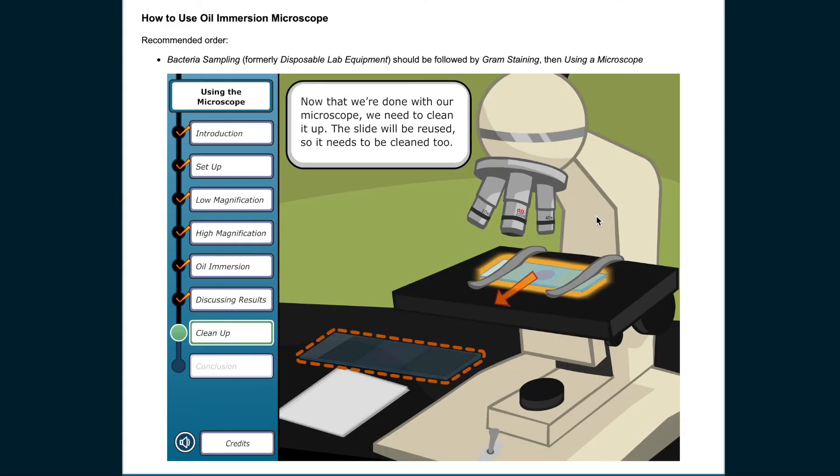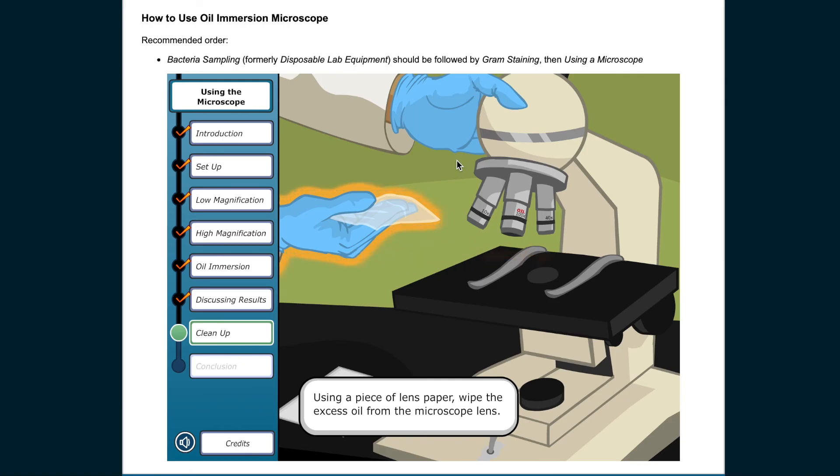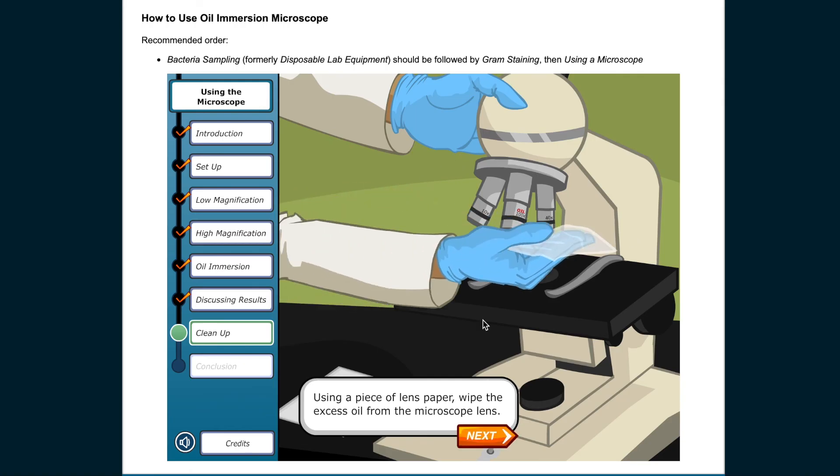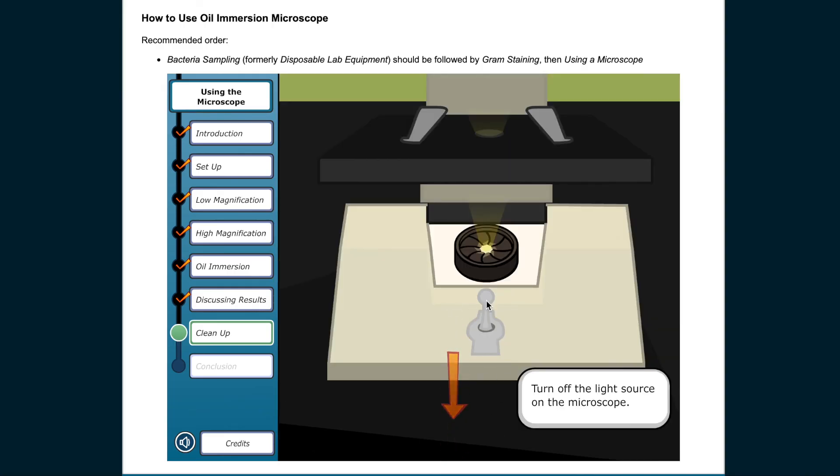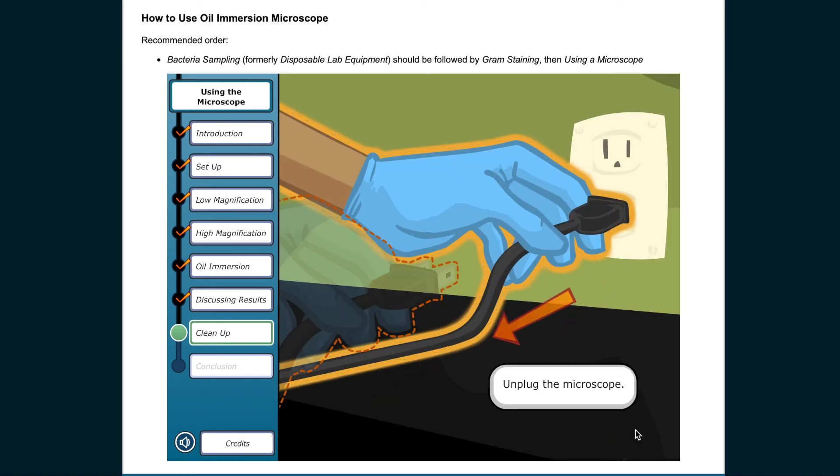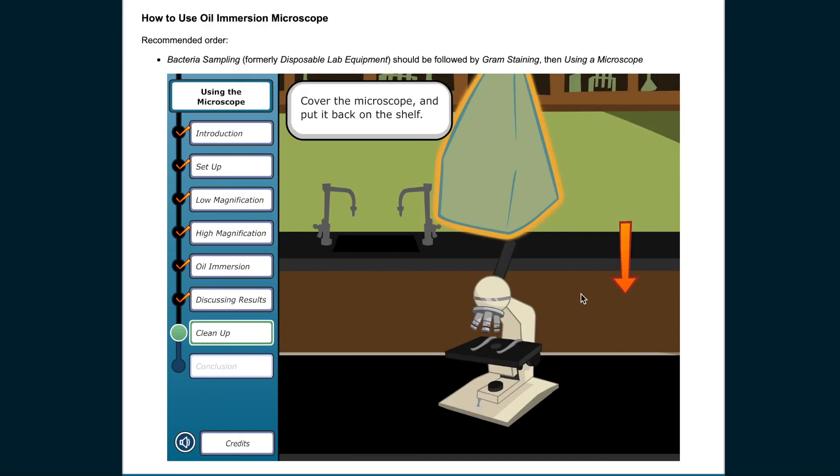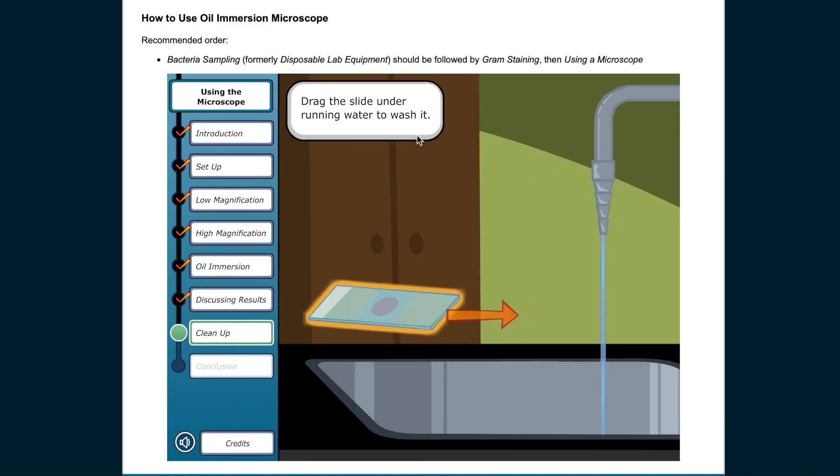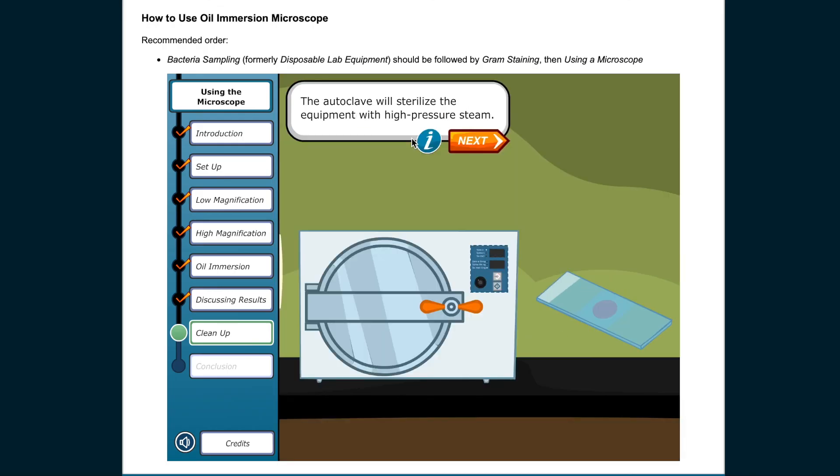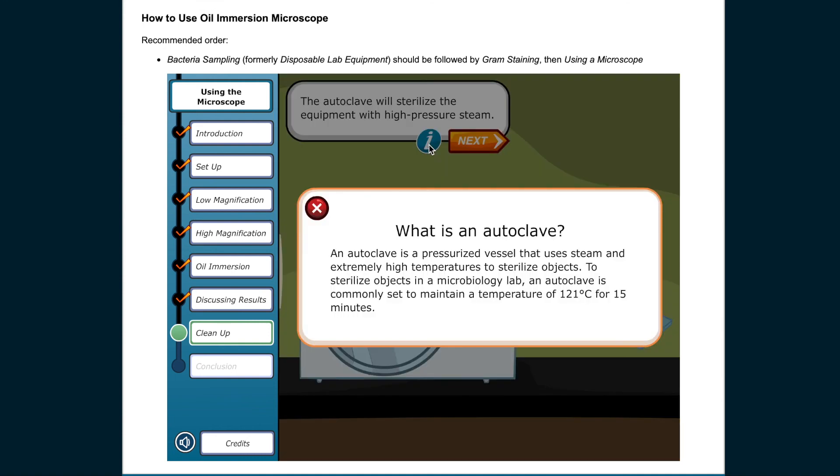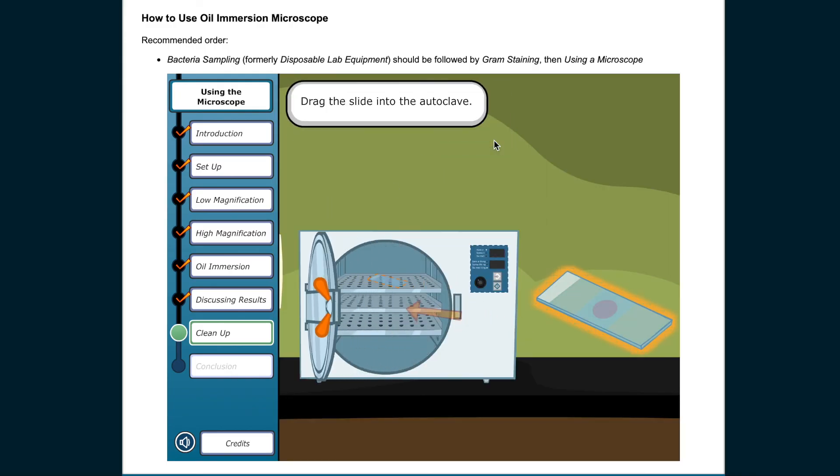Now that we're done with our microscope, we need to clean it up. The slide will be reused, so it needs to be cleaned too. Using a piece of lens paper, wipe the excess oil from the microscope lens. Turn off the light source on the microscope. Unplug the microscope. Cover the microscope and put it back on the shelf. Drag the slide under running water to wash it. The autoclave will sterilize the equipment with high-pressure steam. An autoclave is a pressurized vessel that uses steam and extremely high temperatures to sterilize objects. To sterilize objects in a microbiology lab, an autoclave is commonly set to maintain a temperature of 121 degrees Celsius for 15 minutes.